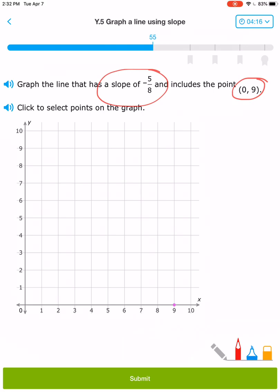But wait! I can't go down 5. So that means I need to do the opposite in order to plot it on this graph.